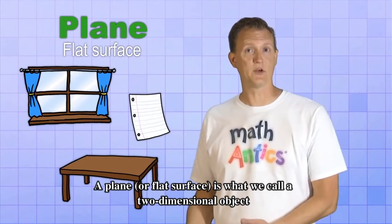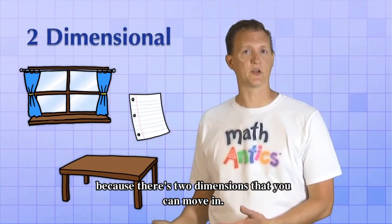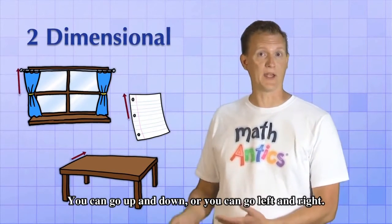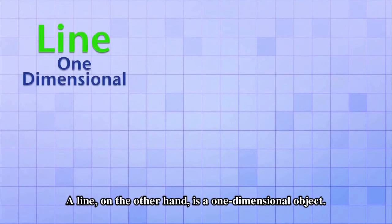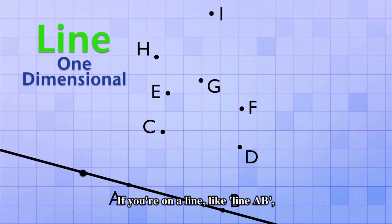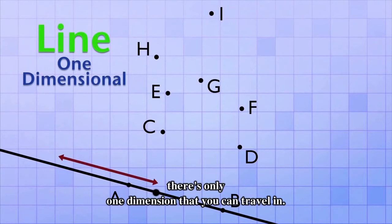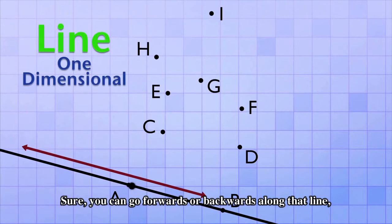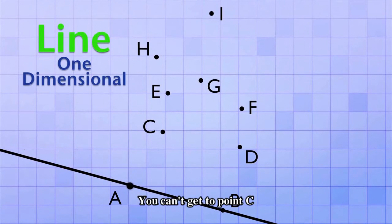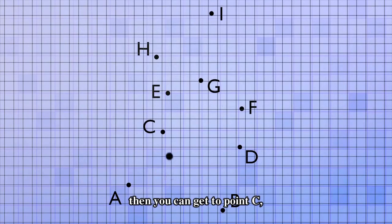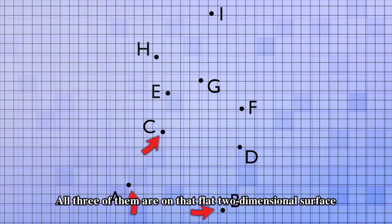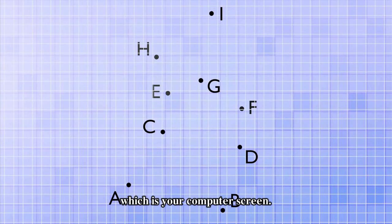A plane, or flat surface, is what we call a two-dimensional object because there's two dimensions that you can move in. You can go up and down, or you can go left and right. A line, on the other hand, is a one-dimensional object. If you're on a line, like line AB, there's only one dimension that you can travel in. Sure, you can go forwards or backwards along that line, but it still has only one dimension. You can't get to point C without going off of line AB. But if you're on a plane, a two-dimensional object, then you can get to point C, because point C is on the same plane as points A and B. All three of them are on that flat, two-dimensional surface, which is your computer screen.